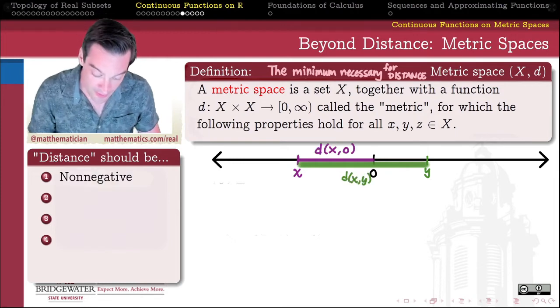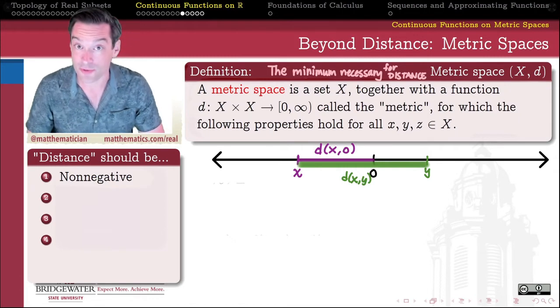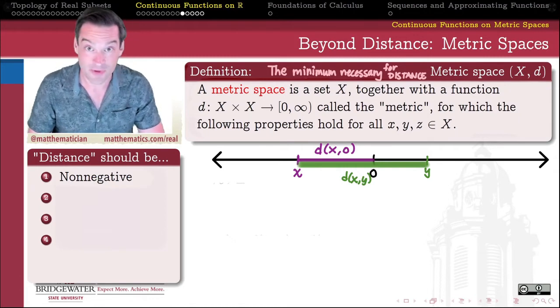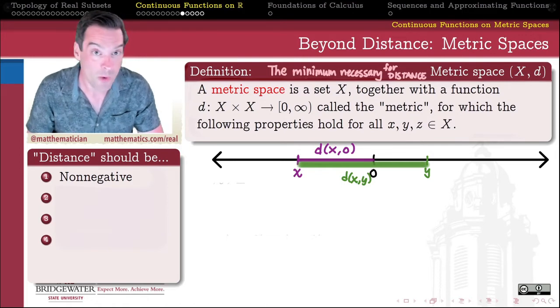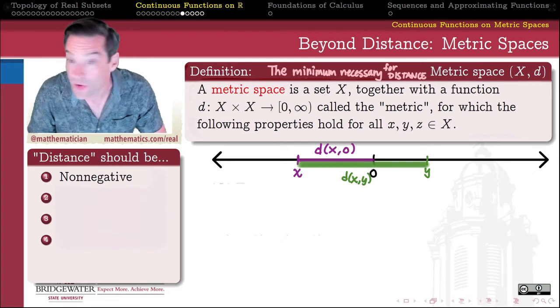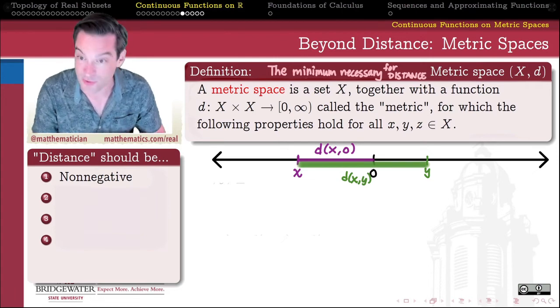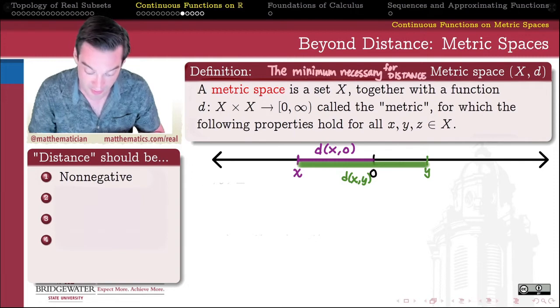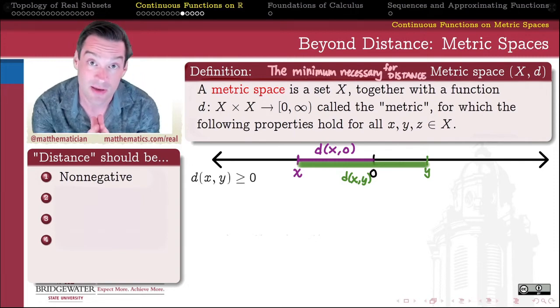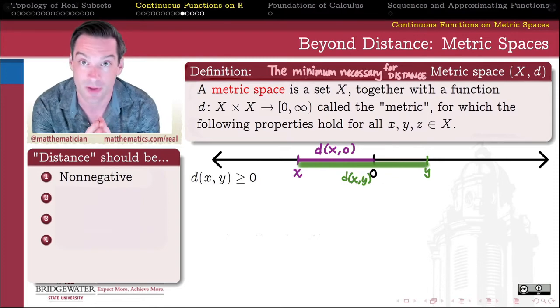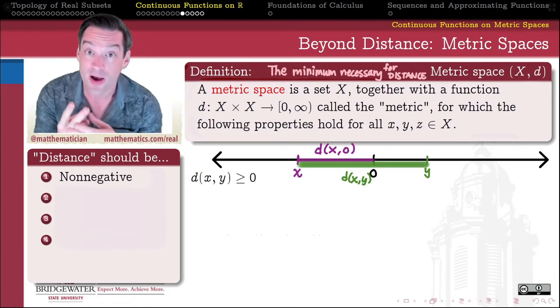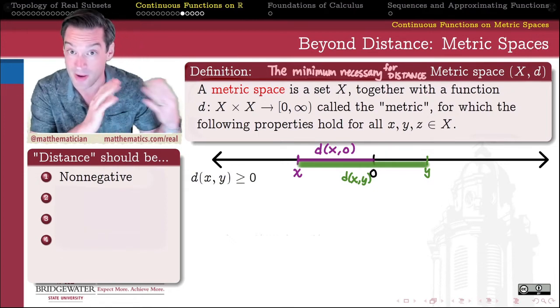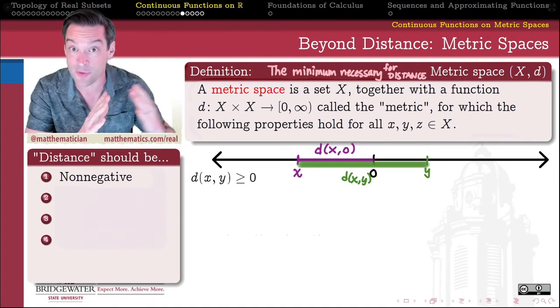We can't just put any old thing in here. We're going to want distance to still have some of the properties that we want to take for granted when we talk about distance in ordinary contexts. There's four things that we need for this distance function, this metric to satisfy. The first one is just like we learn in ordinary high school geometry, we should never have a distance that's a negative number. So all of the values that my metric takes are going to be non-negative. More specifically, it says that for any x and y, the distance between x and y is greater than or equal to zero, no matter what. But that greater than or equal to allows for two possibilities: a positive distance and a zero distance.